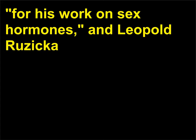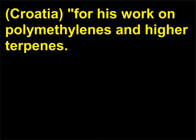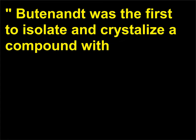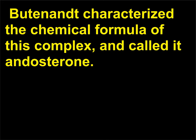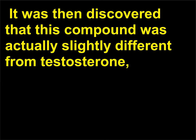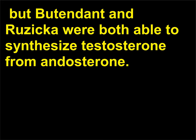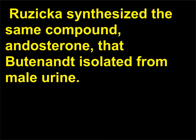For his work on sex hormones, and Leopold Ruzicka, Croatia, for his work on polymethylenes and higher terpenes. Butenandt was the first to isolate and crystallize a compound with the characteristics of a male sex hormone by extraction from male urine. Butenandt characterized the chemical formula of this complex and called it androsterone. It was then discovered that this compound was actually slightly different from testosterone, but both Butenandt and Ruzicka were able to synthesize testosterone from androsterone.